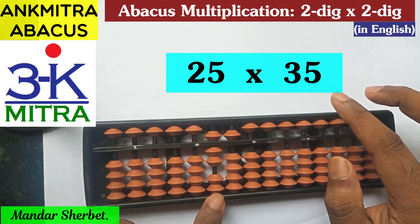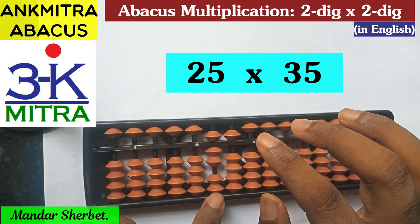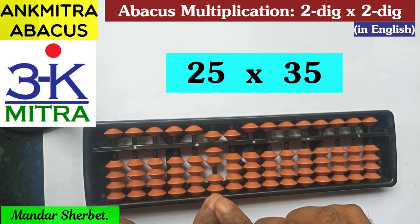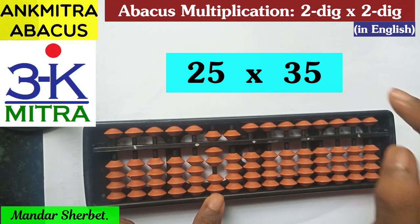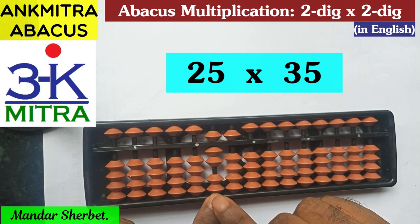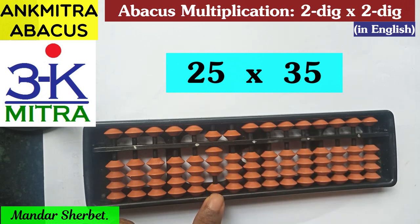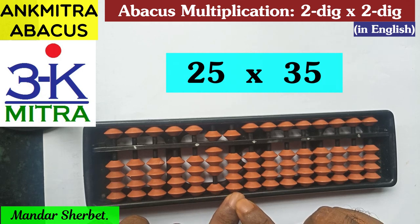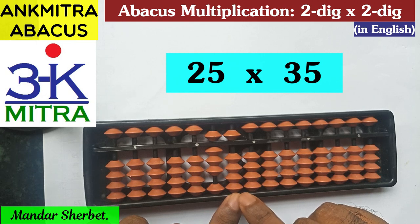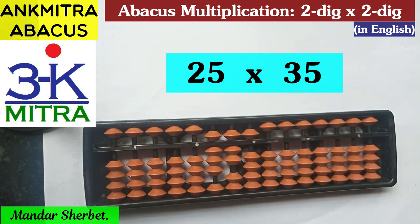Now for the second half, I'll use the units place digit 5 from 35, multiplying with each digit of 25, starting from the third rod. So 5 multiplied by 2 is 10 — I add 1 on this rod and 0 on the next. Moving one place to the right: 5 multiplied by 5 is 25, so I add 25 from this rod — 20 on this rod and 5 on the next. The answer for 25 multiplied by 35 is 875.